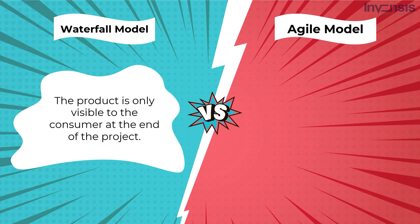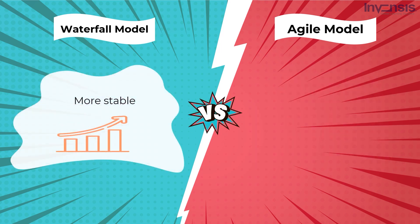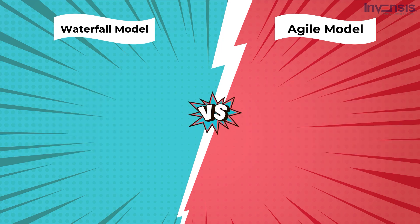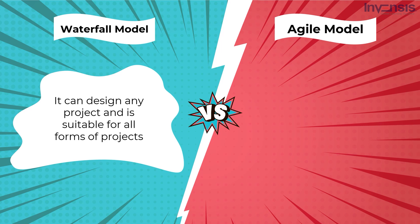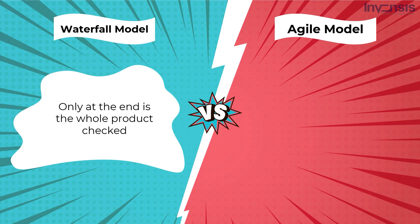In the Waterfall model, the product is only visible to the consumer at the end of the project. In Agile, the customer is given regular and early opportunities to review the product and make improvements. Waterfall models are more stable since they are plan-driven, whereas the Agile model is considered unstructured. In terms of planning, the Waterfall model suits large projects, while for Agile, estimating construction time for large projects is challenging. In the Waterfall model, if a requirement mistake is discovered, the project must be restarted from the beginning.